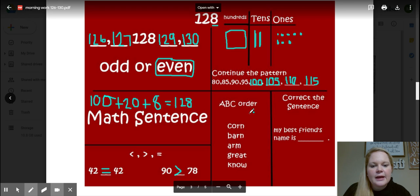All right, now let's take a look at our ABC order. We have corn, barn, arm, great, and know. So if we're going in ABC order, the first word would be arm. Then the second word would be barn: B-A-R-N. And then our third word, corn: C-O-R-N.